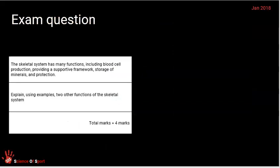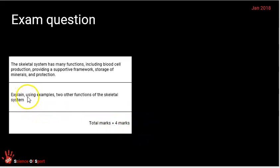Before finishing, here is a typical exam question you might encounter. It states that the skeletal system has many functions, including red blood cell production, a supportive framework, storage of minerals, and protection — giving you four. It then asks you to explain, using examples, the two other missing functions. Note there are four marks available. Because the question specifically asks for examples, not giving them means throwing away two of the four marks. You need to explain one function with an example, then explain the second function with an example, to gain all four marks.